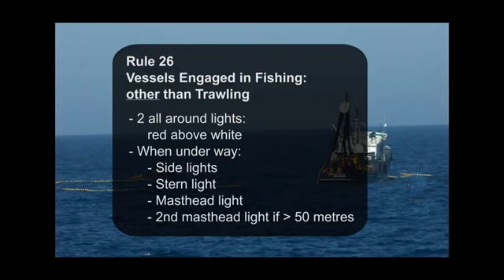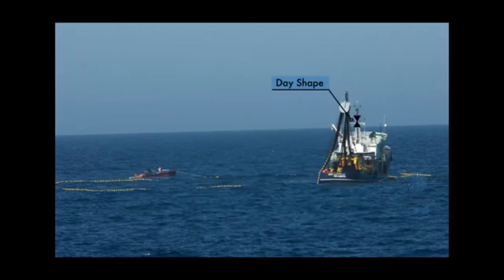Rule 26, Sailing Vessels Engaged in Fishing, Other Than Trawling: two all-around lights, red above white. When underway: side lights, stern light, masthead light, and a second masthead light if length overall exceeds 50 meters. Day shape: two cones with their apexes together in a vertical line, one above the other.